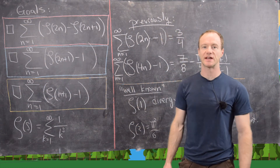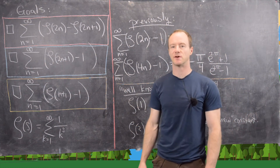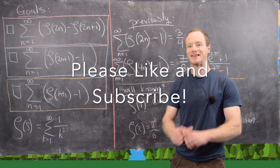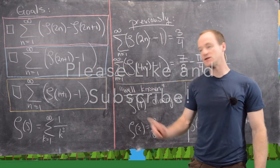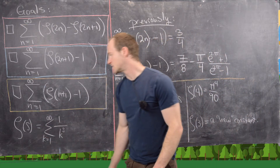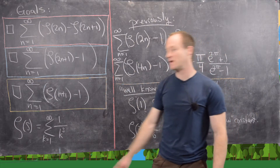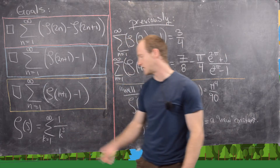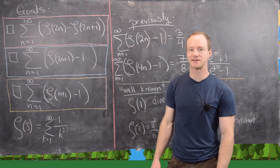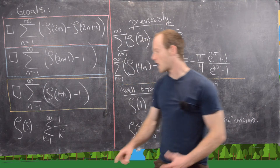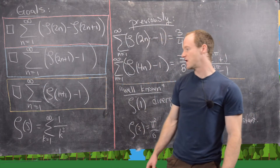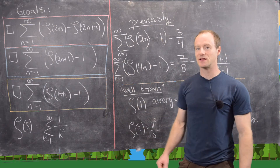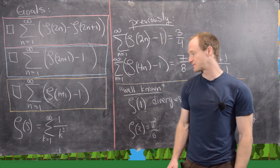In this video we're going to derive some really interesting identities involving the Riemann zeta function, which is a super important function in analytic number theory, having to do with the distribution of the primes. The zeta function evaluated at s is equal to the sum from k equals 1 to infinity of 1 over k to the s, and it automatically converges if the real part of s is greater than 1, and then it can be analytically continued to almost the entire complex plane.